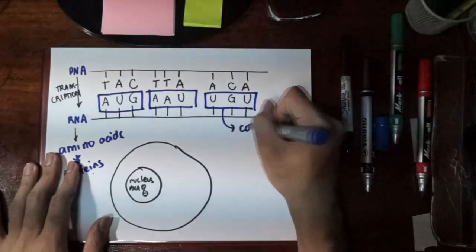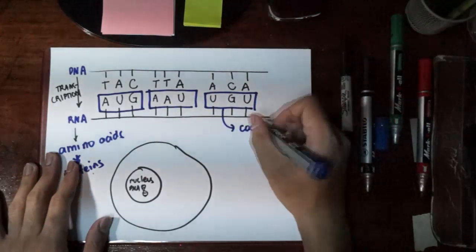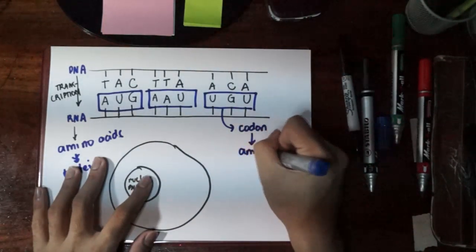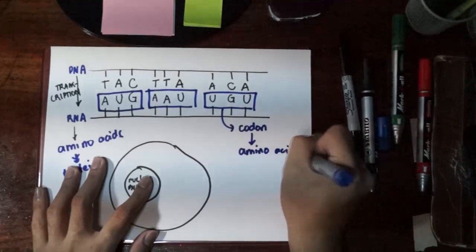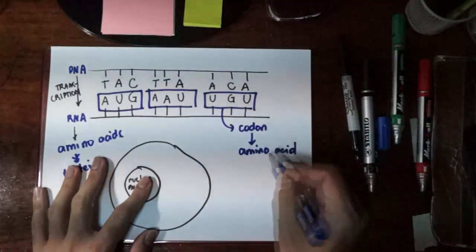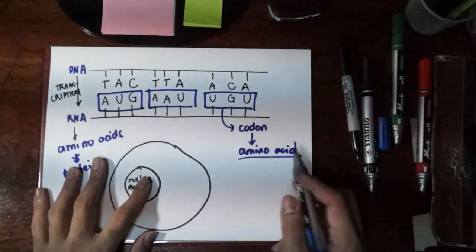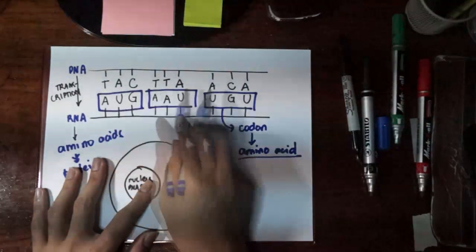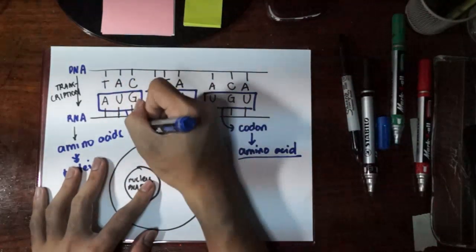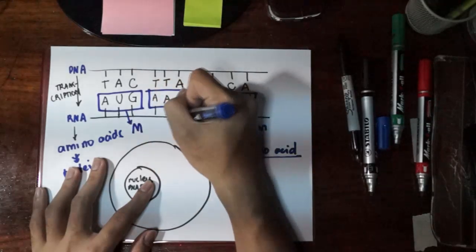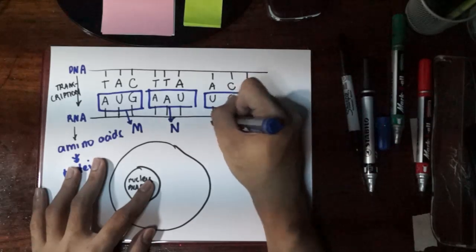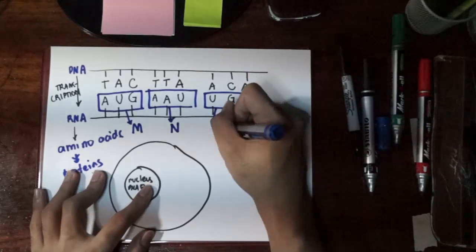Each of this is known as a codon. And for a codon, there is a particular amino acid that would be coded by a codon. That's why it's like a codon - it codes for a particular amino acid. For example, I just got this from my reference: AUG here would give us the amino acid methionine, AAU would give us asparagine or N, and UGU would give us the amino acid cysteine.